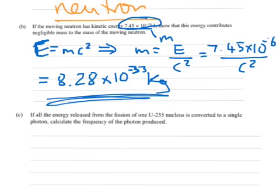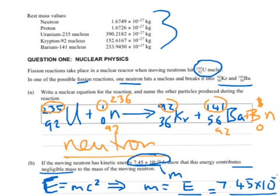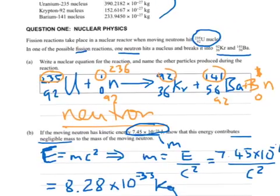Okay, so how do we show that it contributes negligible mass to the mass of the moving neutron? We have to go back up and look at our mass of the actual neutron itself. So let's go back up to our data that was given. And we've got this information here. We've got the mass of a neutron. It's 1.6749 times 10 to the minus 27.